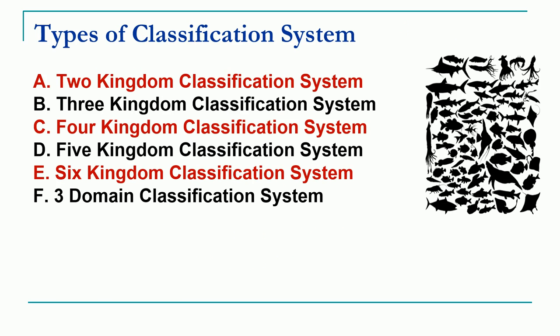Over the historical period of time, different types of classification systems were proposed by different taxonomists. The first system proposed was the two-kingdom classification system, followed by the three-kingdom, four-kingdom, five-kingdom, and most recently the six-kingdom classification system, also known as the three-domain classification system.